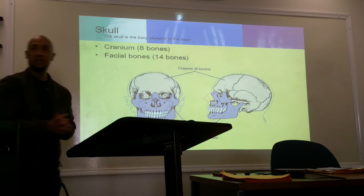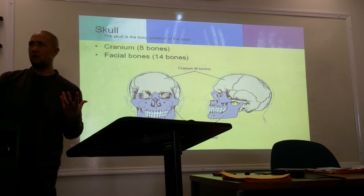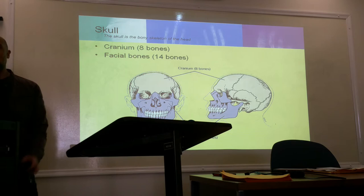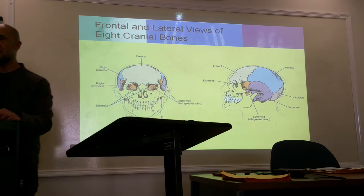The skull is the bony skeleton of the head. It includes eight cranial bones and 14 facial bones — so 22 bones in the skull alone. And we're not even counting the pairs yet. There are many bones in the face and skull that come in pairs, so we're really talking about 22 plus bones.